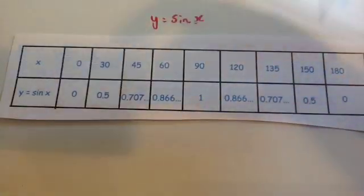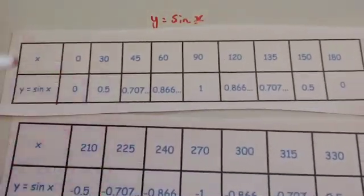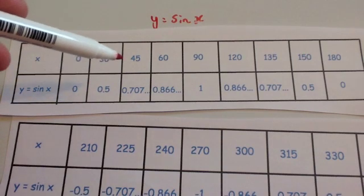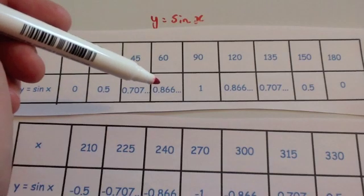When you do that, it'll look something like this. So you find that whenever x is 0, sine of x is 0. Whenever x is 30 degrees, sine of x is 0.5. 45 degrees, 0.707 and so on. 60 degrees, 0.866 and so on.